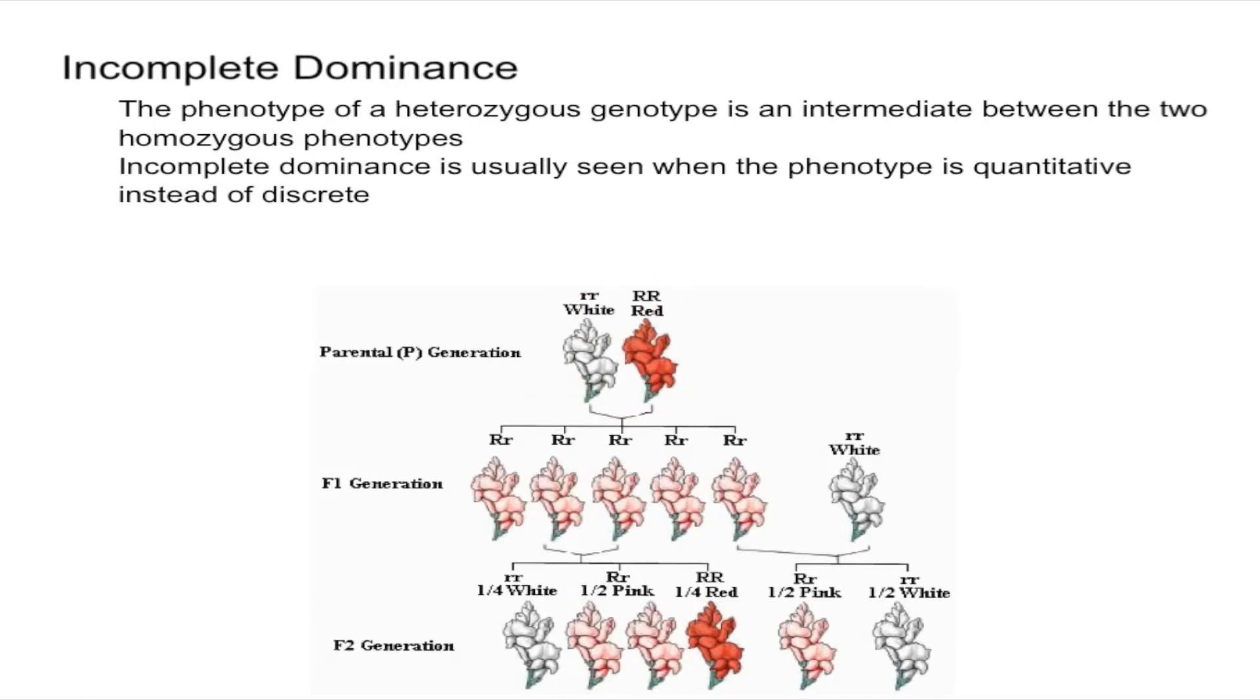And then when they are mated to produce the F1 generation you have obviously the same genotype, so they're all heterozygous. And so you can see here that they're pink instead of either white or red.